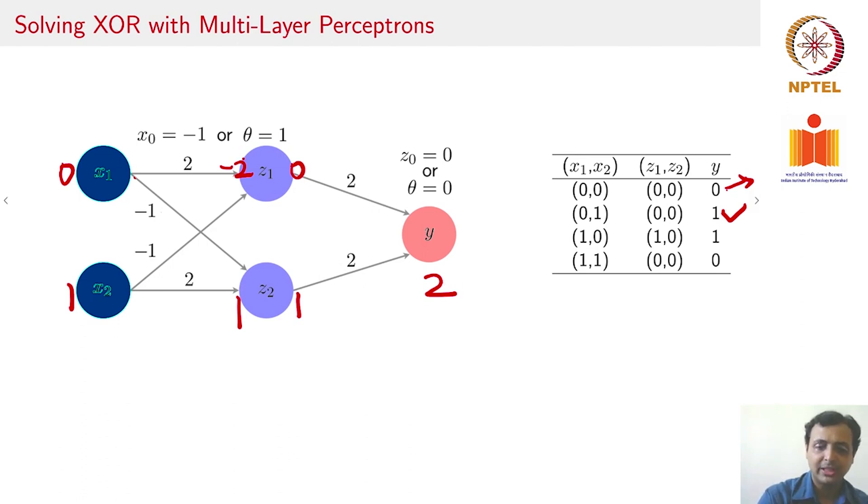A similar thing would hold for the third tuple (1,0). Let us work out the last one. When we have (1,1), you are going to have 2, minus 1, minus 1, which is 0. Similarly, you would have 2, minus 1, minus 1 from bias, giving 0. So you get 0 and 0. You can work this out, and you will notice that this is a valid solution for the XOR problem.